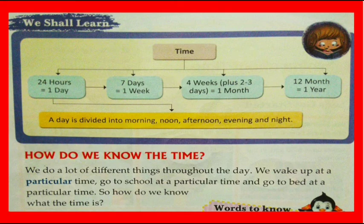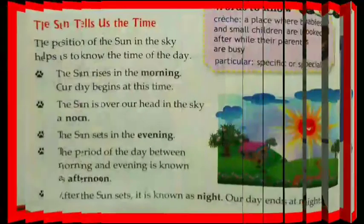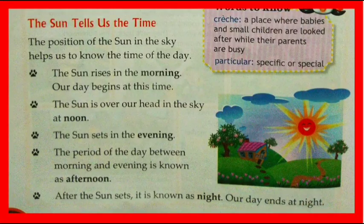A day is divided into morning, noon, afternoon, evening, and night. How do we know the time? We do a lot of different things throughout the day — we wake up at a particular time, go to school at a particular time, and go to bed at a particular time. The sun tells us the time; the position of the sun in the sky helps us to know the time of the day.